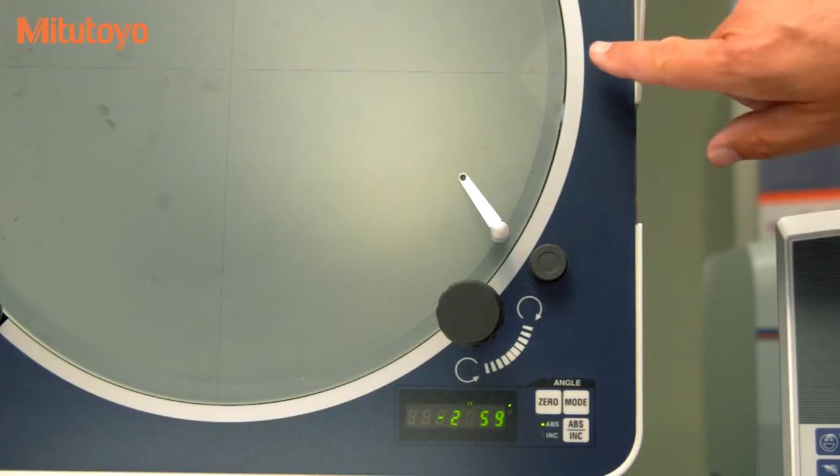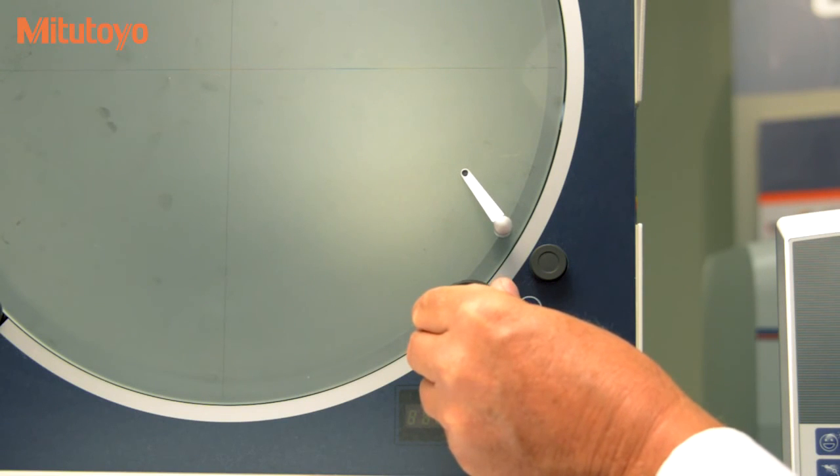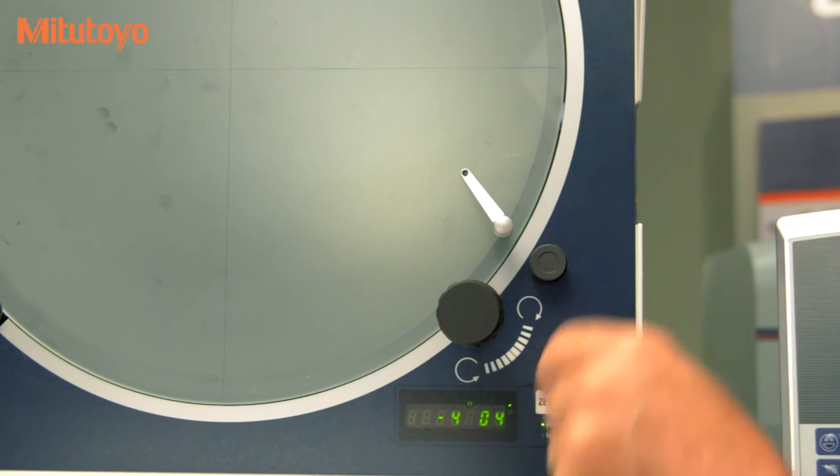The digital protractor can display in absolute or incremental units, and the screen can be locked to prevent rotational errors.